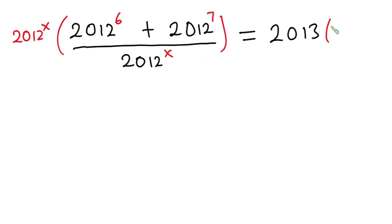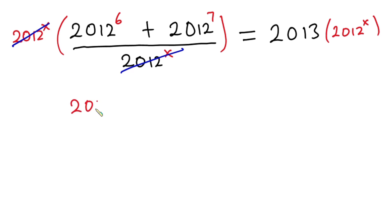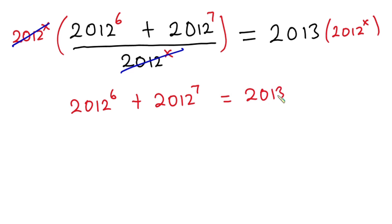So we have times 2012 to the power x, and straight away you can see that this will cancel out the denominator. From the left hand side we are left with 2012 to the power 6 plus 2012 to the power 7, and this is equal to 2013 times 2012 to the power x.